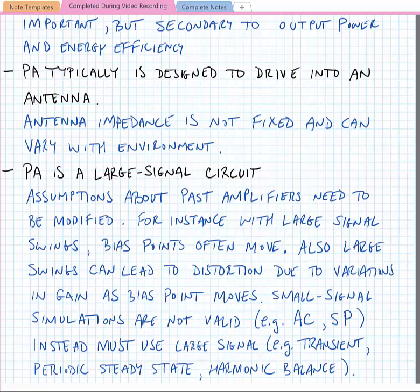A power amplifier is a large signal circuit. Assumptions we've made in early electronics and RF courses are that amplifiers have small signal swings. Power amplifiers have large signal swings, and when you have large signal swings, oftentimes the bias point moves because the large signal swing can lead to distortion or variations in the gain of the amplifier. So we can't use small signal simulations for power amplifiers like AC simulations or S-parameter simulations.